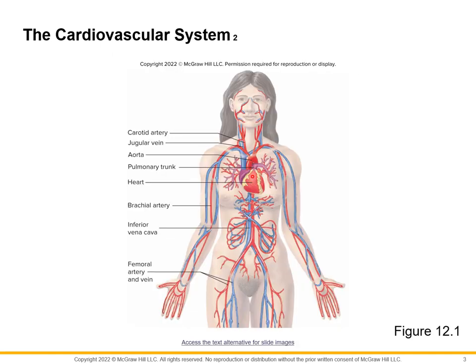This illustration shows us the cardiovascular system where the heart is located. Over here is the carotid artery, jugular vein, the aorta, and the pulmonary trunk. These are the main areas that we have to be familiar with when the general structure of the cardiovascular system is discussed.